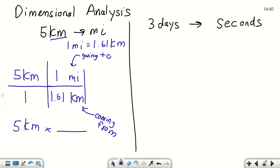Now that I'm in the unit that I want, I'm done. In this case, this is a one-step problem. Then what we do is basically, any number up top, we're going to multiply by. And any number on the bottom, we're going to divide by. You can do that in your calculator. 5 times 1 divided by 1.61. This comes out to 3.1 miles.